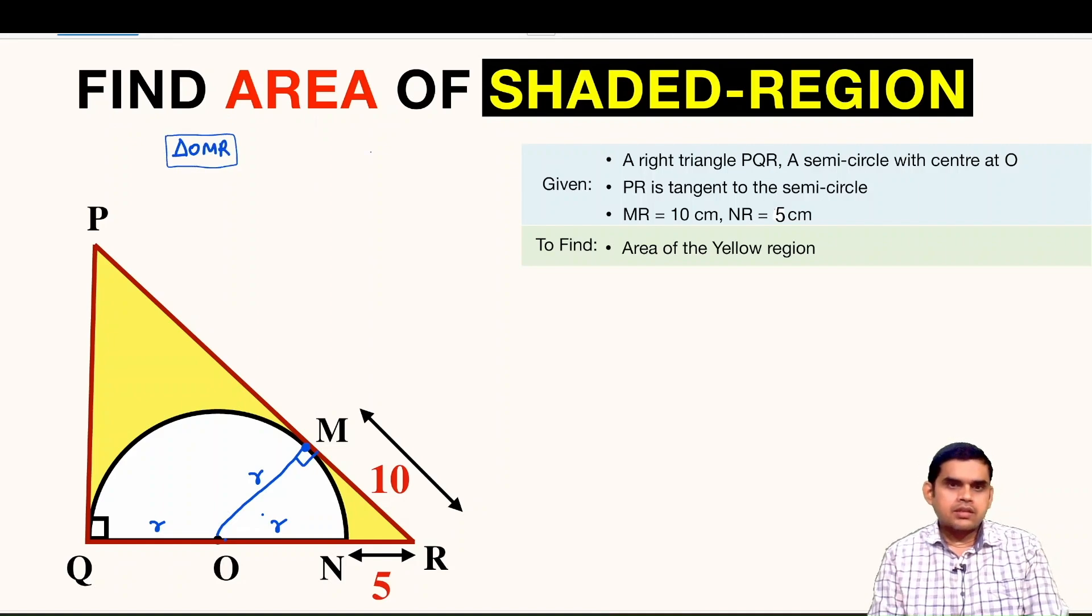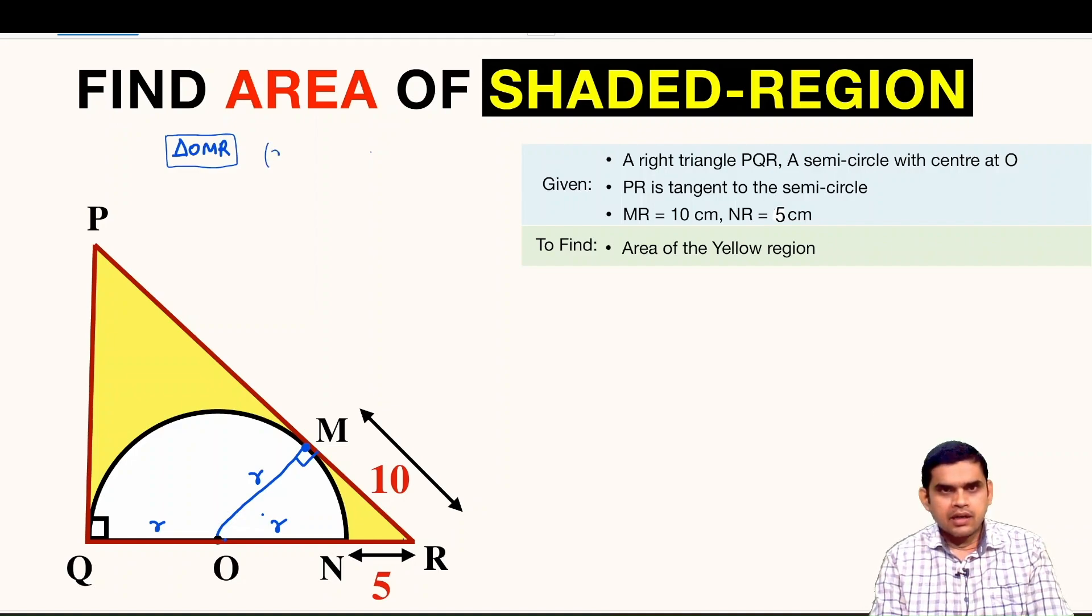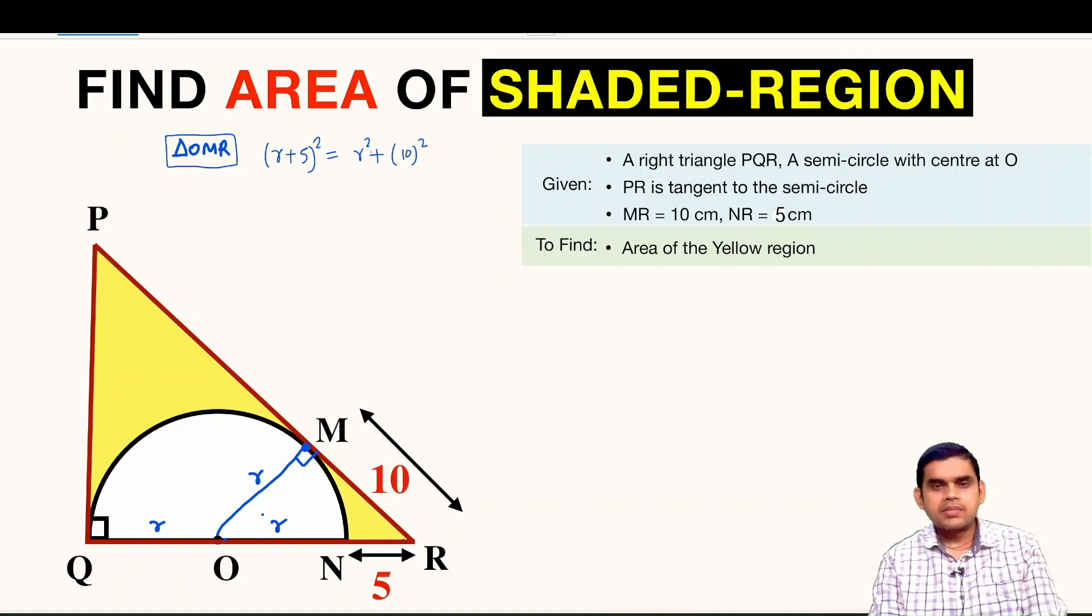It is a right angle triangle where OR will act as hypotenuse. So OR square, that means (R + 5) whole square is equal to R square plus 10 square. Simply we have applied Pythagoras theorem in triangle OMR.